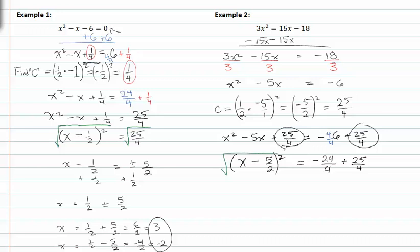Taking the square root of both sides to solve for x gives me x minus five halves is equal to the square root of one-fourth, which is equal to plus or minus one-half. Adding five halves to both sides, I get five plus one plus or minus one over two, so x is equal to six halves or two-fourths, which reduces to three or two.